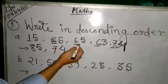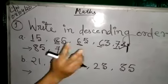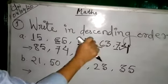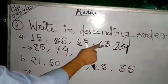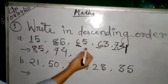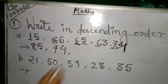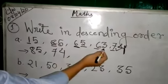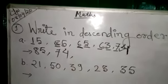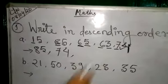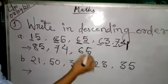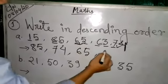So, if the two numbers have the same value, like here 6, here it is also 6, go to the next digit or you can say second digit. Here, second digit is 5 and here second digit is 3. So, which is greater? 5 or 3? Of course, it is 5. So, you will write 65, then followed by 63.